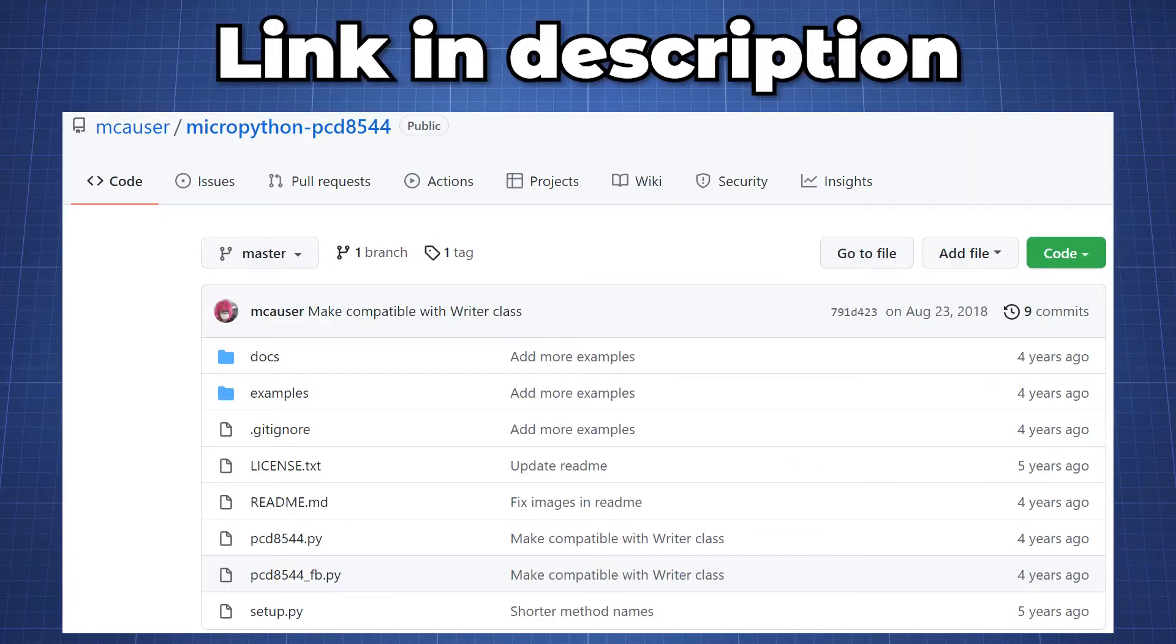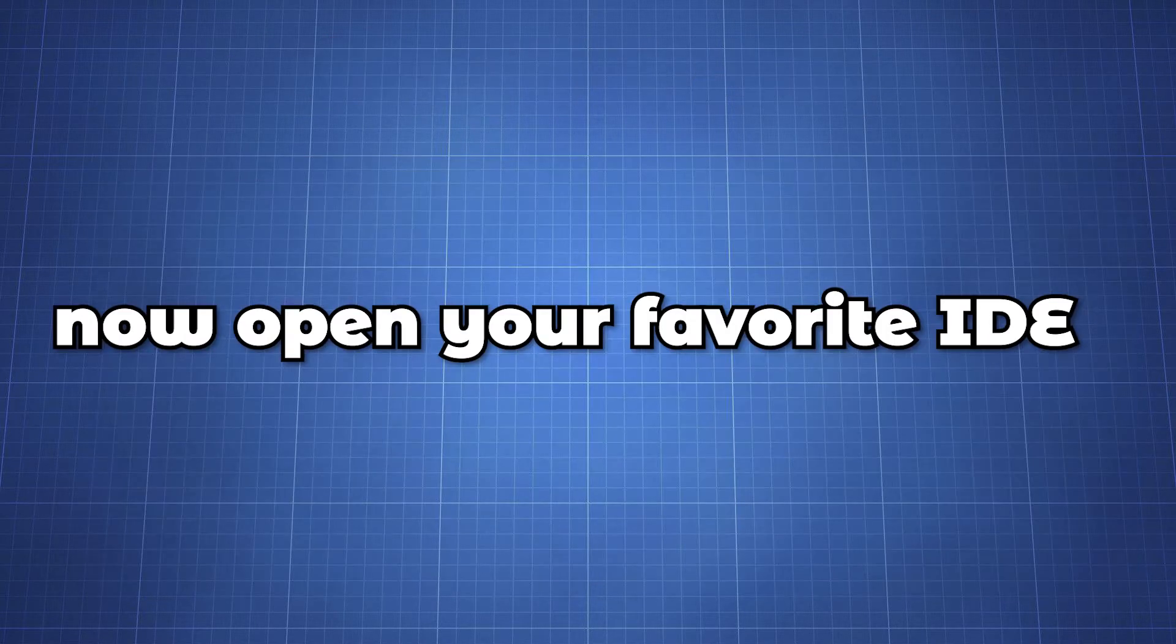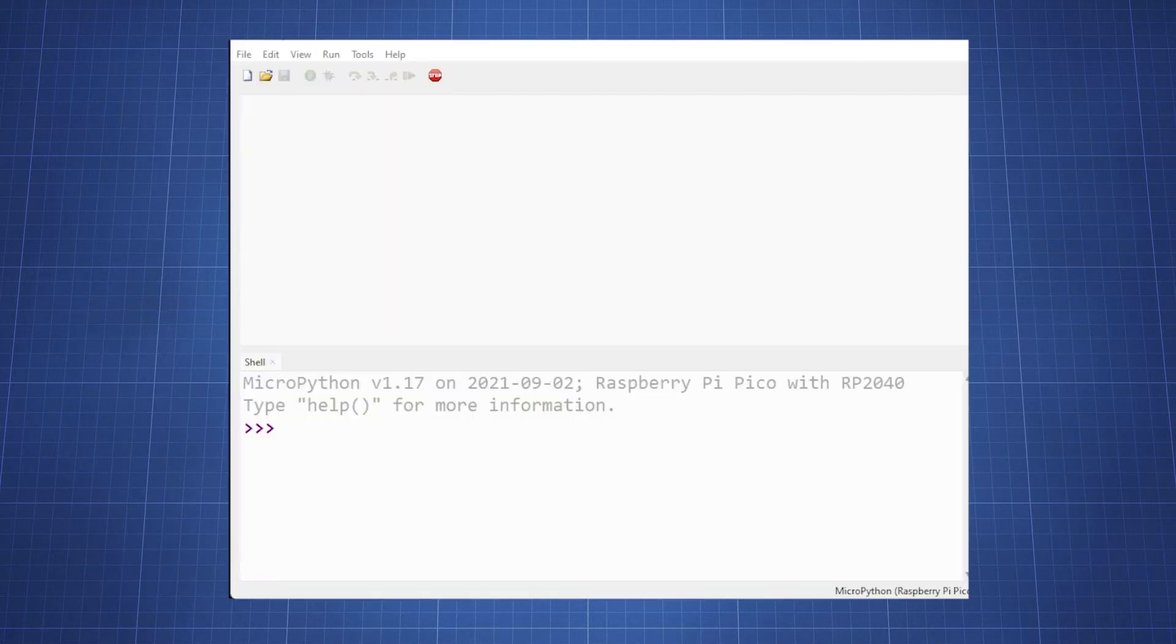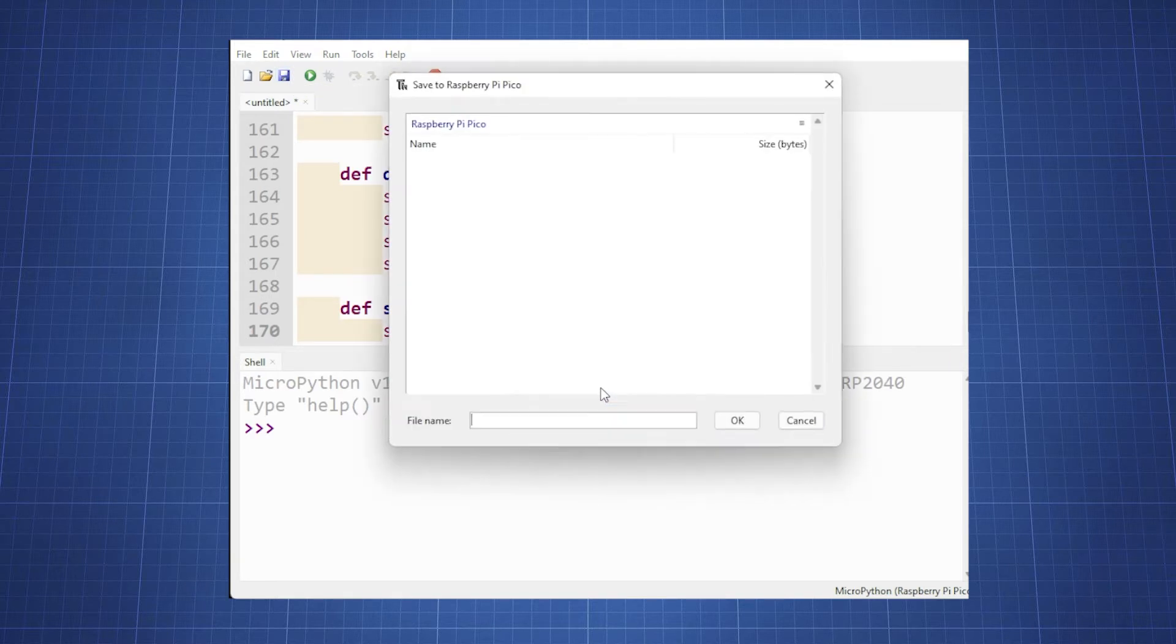You can find the GitHub repository for a library in the description that we will use for the Pico. Open the PCD8544 underscore fp.py file and copy all the code. Now open your favorite IDE. In this video I am going to use Forni so I am going to create a new file, paste the code I just copied and I will save it to the Pico. Make sure when you save it, it has the same name as the original file ending with .py.